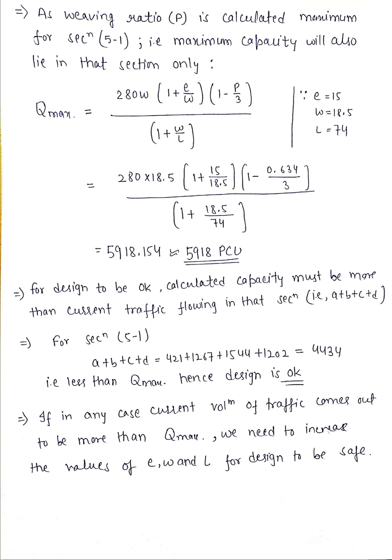We need to check whether the traffic in the section is less than that value or more than that value. Here a + b + c + d is the current traffic moving in that section. It is 4434, which is less than the maximum capacity, means design is okay.